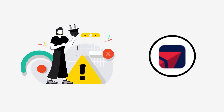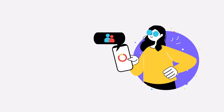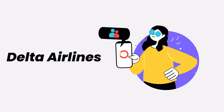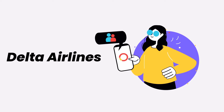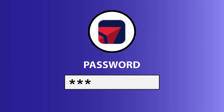It might be possible that you're not able to log in due to a connectivity issue. First of all, you need to make sure you have a strong and stable internet connection. Do a quick test by opening up an app that runs on internet other than the Delta Airlines app and check if it's working. You can also try switching from Wi-Fi to mobile data and vice versa.